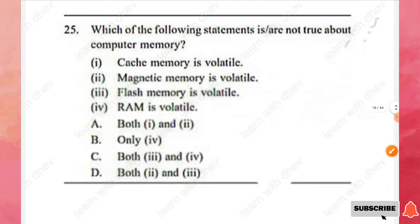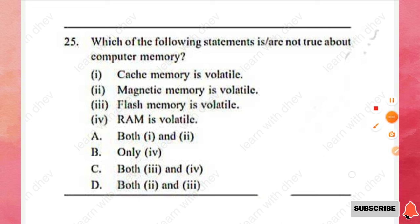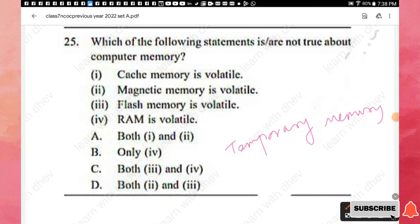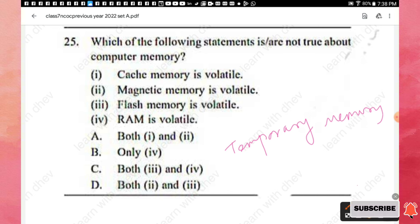Question 25: Which of the following is not true about computer memory — cache memory is volatile, magnetic memory is volatile, flash memory is volatile, or RAM is volatile? Volatile means temporary memory. Flash memory, such as a pen drive, can store data permanently, not temporarily. Magnetic memory and flash memory being listed as volatile is incorrect. The answer — options 2 and 3 are not true — so option D is the right answer.